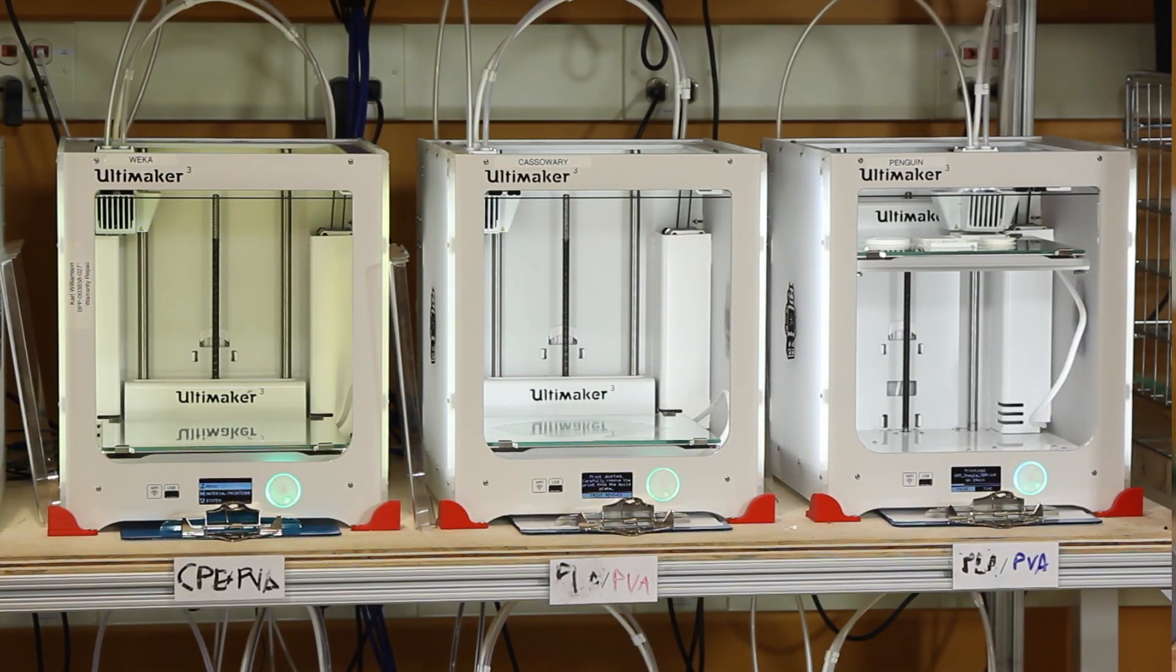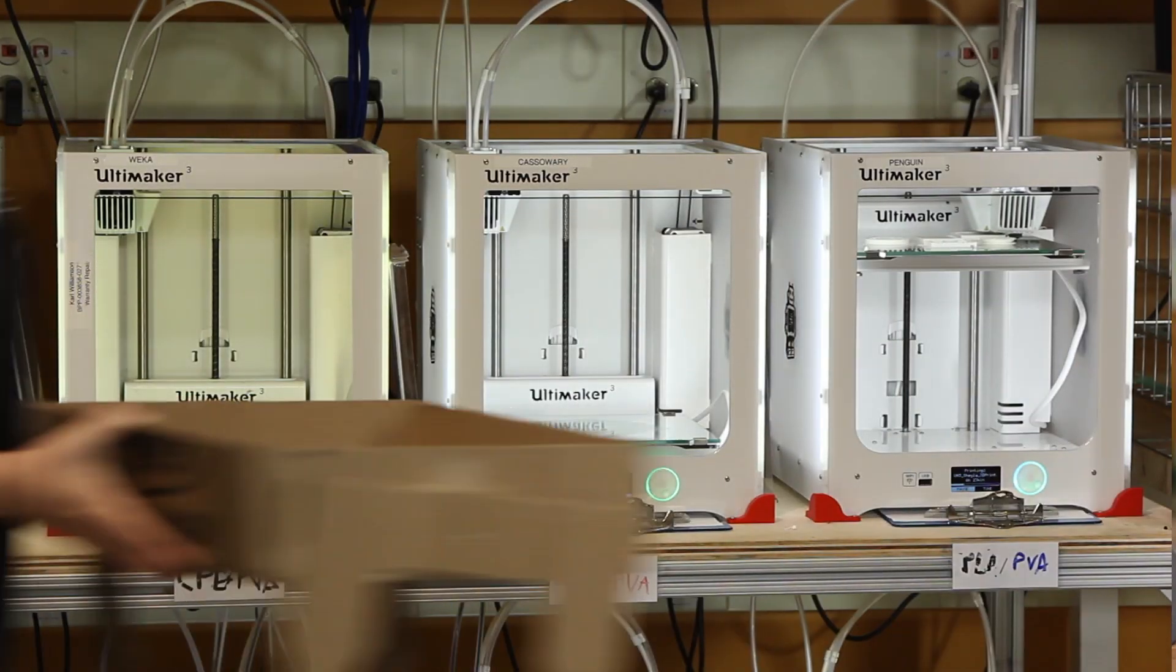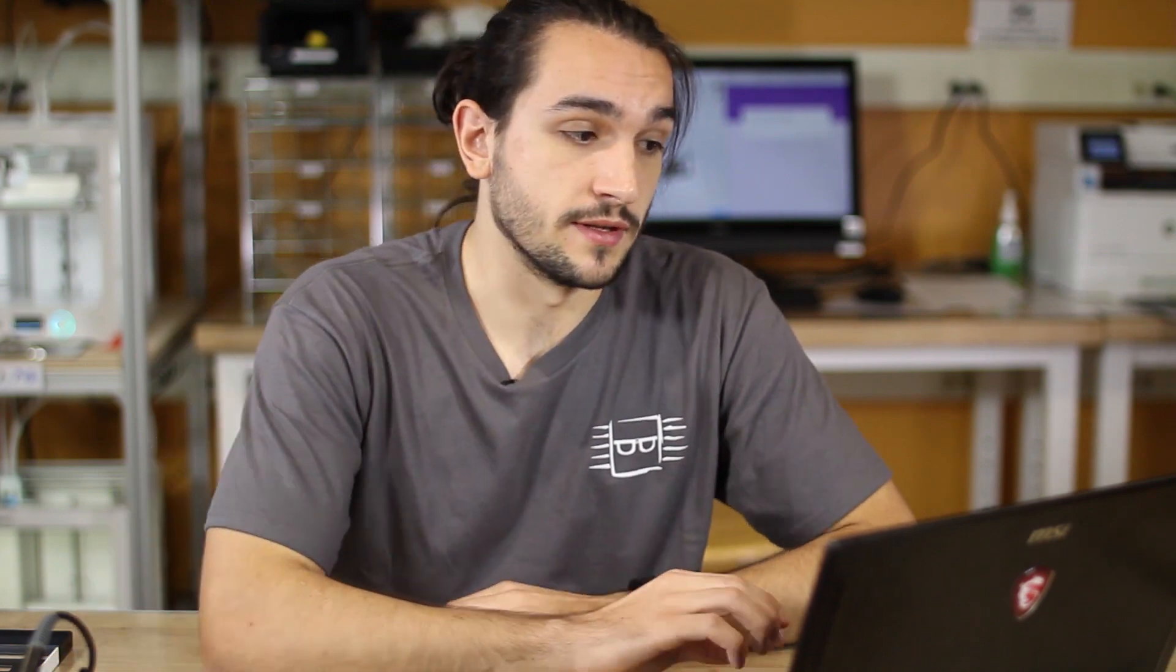Now that we have the parts, the only thing left is to 3D print the enclosures. So while that's going on, let's set up the chip. The Huzzah feather needs to get set up, so you need to set the frequency and the baud rate of the chip. To do that, we're using the Arduino IDE.